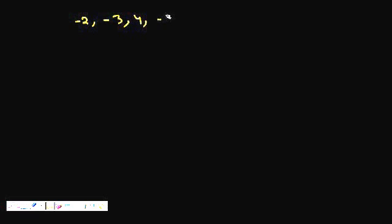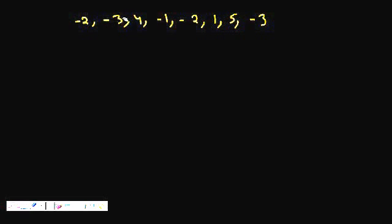Let's say we have the array: -2, -3, 4, -1, -2, 1, 5, -3. We will solve this using dynamic programming. Let's observe some properties. If we need to find the maximum sum subsequence which is consecutive, it is like a window. If we have a negative sum so far and we encounter something positive, we won't include the negative prefix — we only extend the window when it is adding positively.